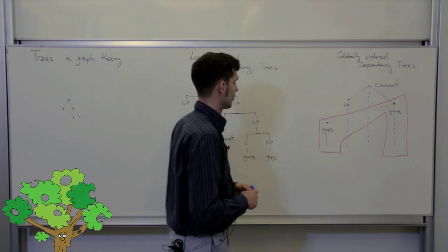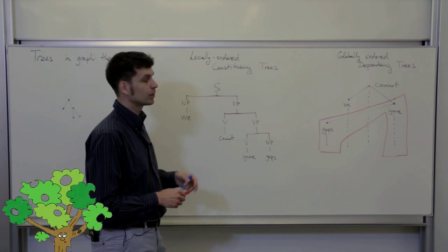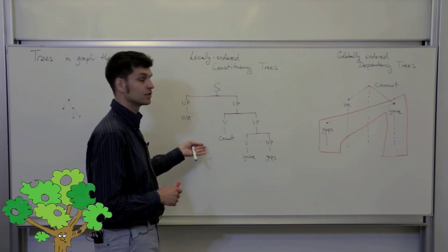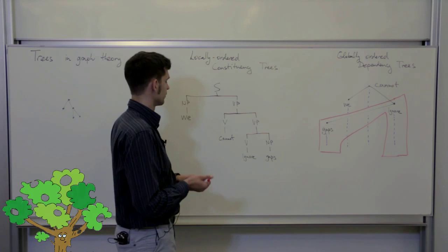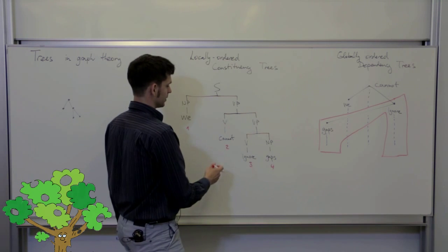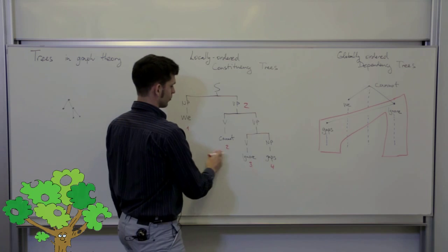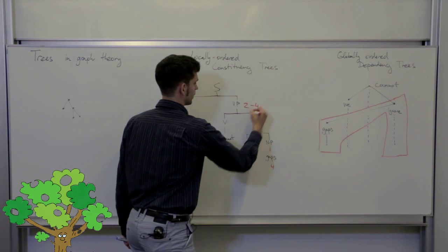It turns out that the expressive power of these two types of structures is different. One way to realize this is to consider the constituency-based parsing that we discussed last time. In constituency trees, we need to keep track of the span of each non-terminal with just two indices: the first word it covers and the last word it covers.